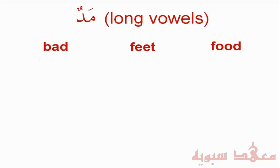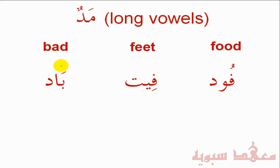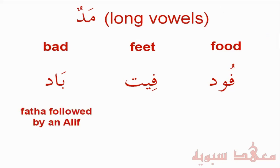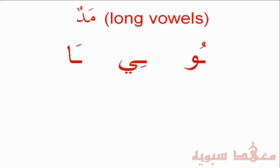If I transliterate this into Arabic, we have 'bad', 'feet', and 'food'. In the first example, 'bad', it's the A sound that's being elongated, denoted by the Fathah followed by the Alif. Similarly, we have a Kasra followed by the Ya, giving the E sound. And finally, a Dhamma followed by the Wow, giving the U sound. So the long vowels are created in these three ways: Fathah followed by Alif, Kasra followed by Ya, and Dhamma followed by Wow — representing the three long vowels.